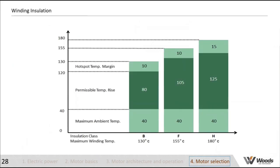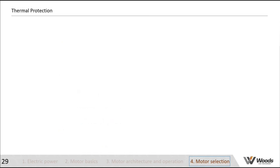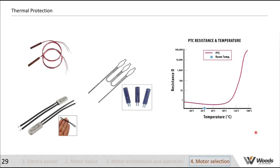Insulation class relates to the maximum winding temperature the motor can sustain. The further down the alphabet the class letter, the higher the maximum winding temperature — classes include A, B, F, H. For example, class H allows a higher maximum winding temperature than class F. Moving on to thermal protection: there are two types — thermostats and thermistors.